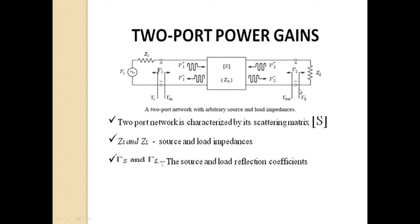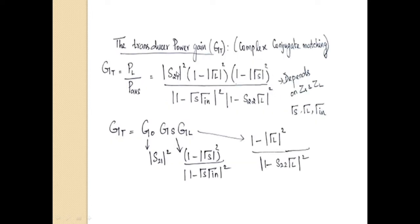Based on the complex conjugate approach, the overall gain of the amplifier circuit is output divided by input — power delivered to the load PL divided by power available from the source P_avs — which gives the overall transducer gain. The formula for that gain is: |S21|² × (1 − |γL|²) × (1 − |γS|²) divided by |1 − γS·γIN|² × |1 − S22·γL|².